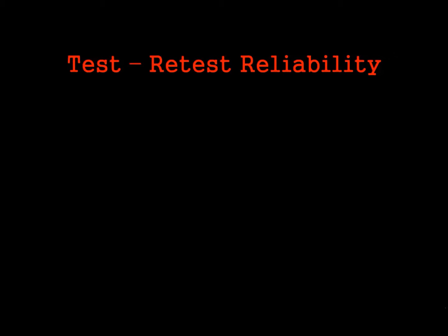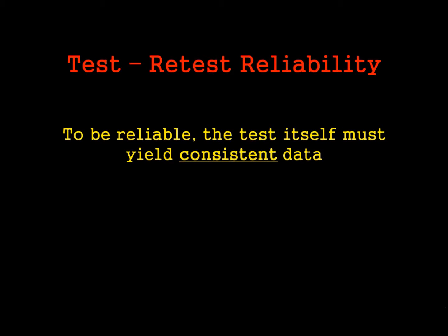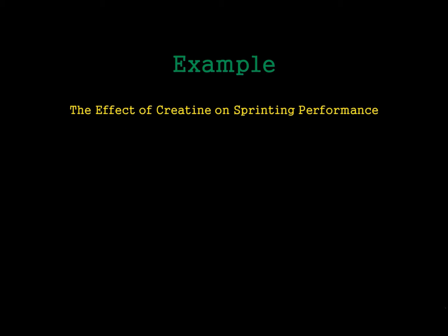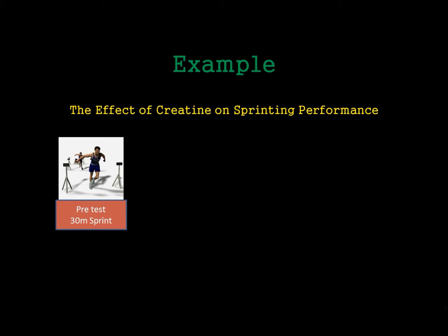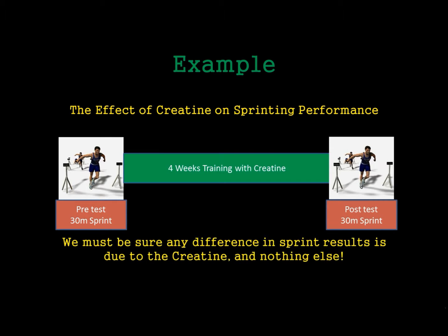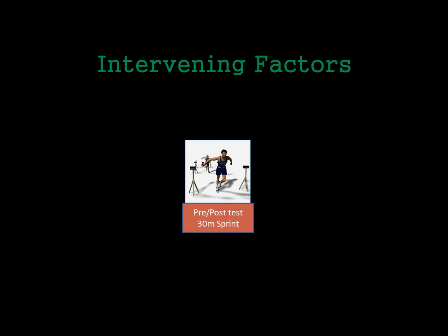The second type is test-retest reliability. To be reliable, the test itself must yield consistent data. Going back to our creatine study using a 30m sprint test, we must be sure that any difference in sprint results is purely down to the creatine and that nothing else has affected results at either the pre-test or the post-test. This brings us to intervening factors — things that will change the scenario between the pre-test and the post-test and affect reliability.